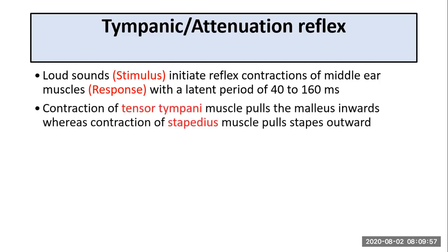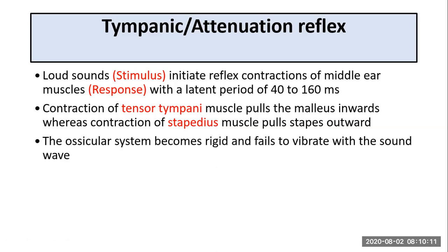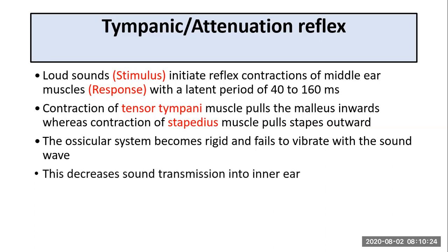The contraction of the two muscles produces opposing forces: the tensor tympani muscle pulls the malleus inwards, whereas the stapedius muscle contraction pulls the stapes outward. These two opposing forces make the ossicular system rigid, causing it to fail to vibrate with the sound wave, so the sound wave is not allowed to enter the inner ear.